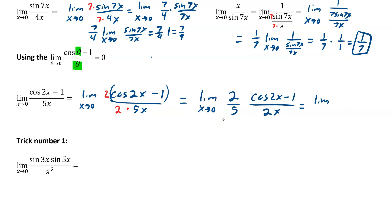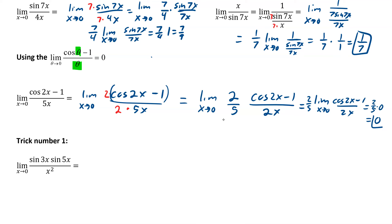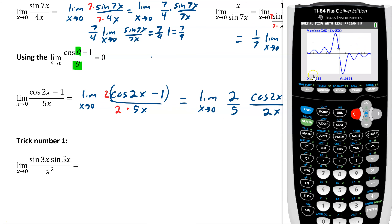So this would now become 2 fifths times the limit as x approaches 0 of cosine of 2x minus 1 over 2x. If you want to get picky, you can say you're changing x to 2x approaching 0, but we'll leave it as x approaches 0. And then this cosine part becomes 0. So this becomes 2 fifths times 0, so the answer is 0. You can check with the calculator — from the left we're coming in to 0, and from the right we're coming in to 0 as well.